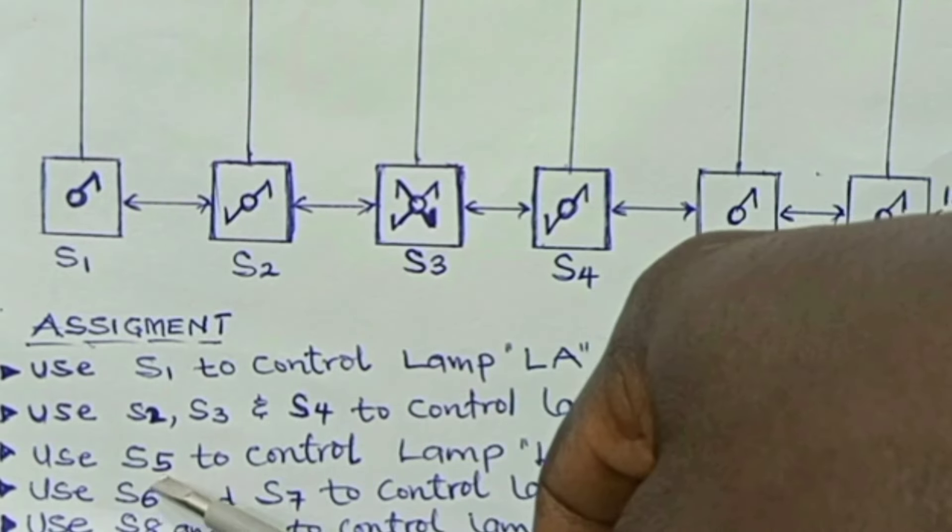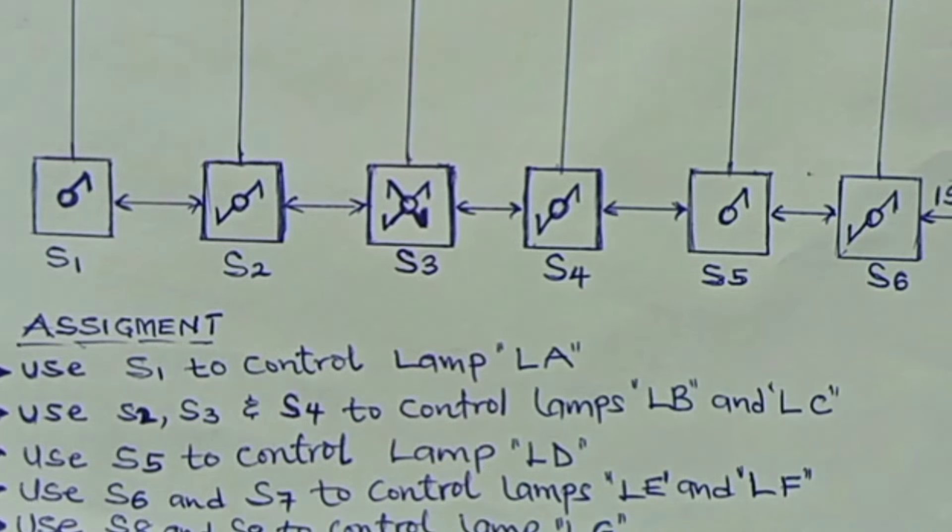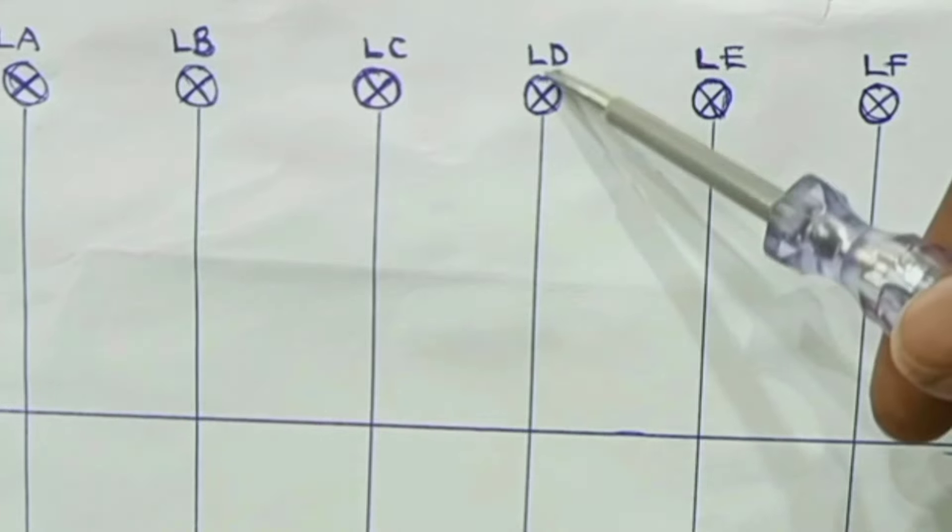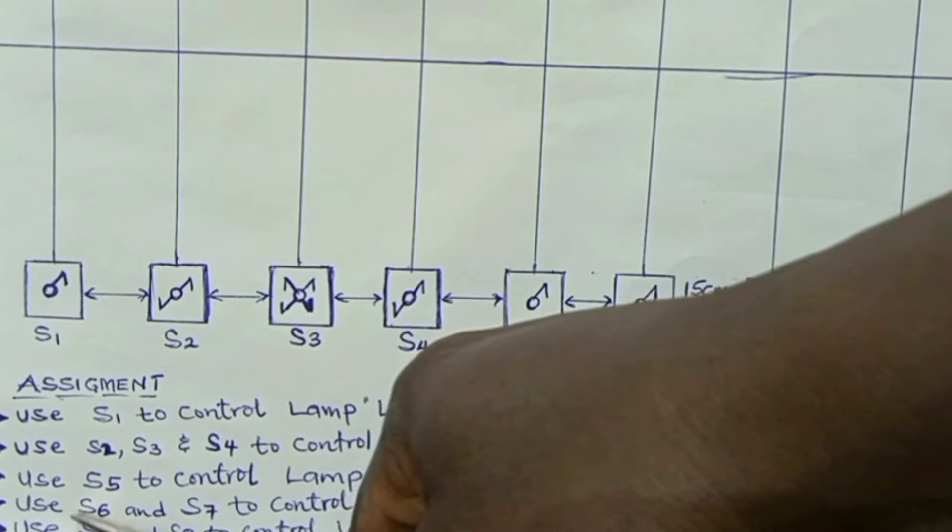Then you have switch 5 to control lamp LD. So this is switch 5, and you are to use this switch to control this lamp LD.